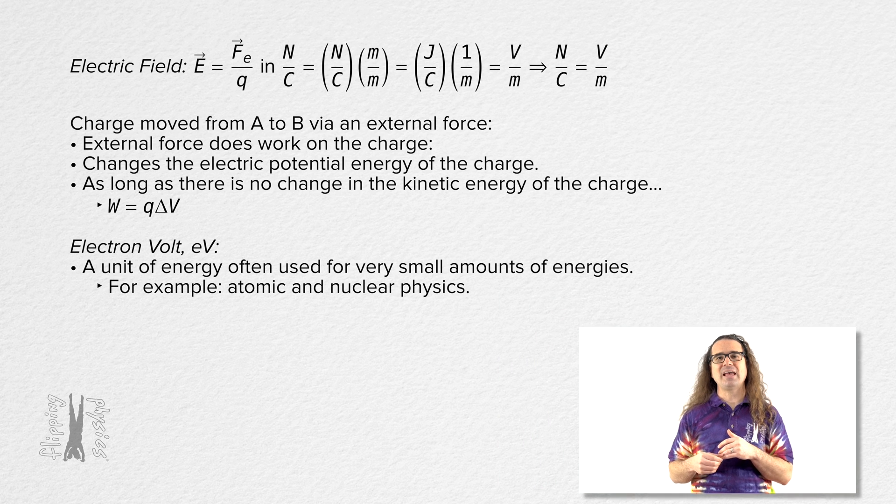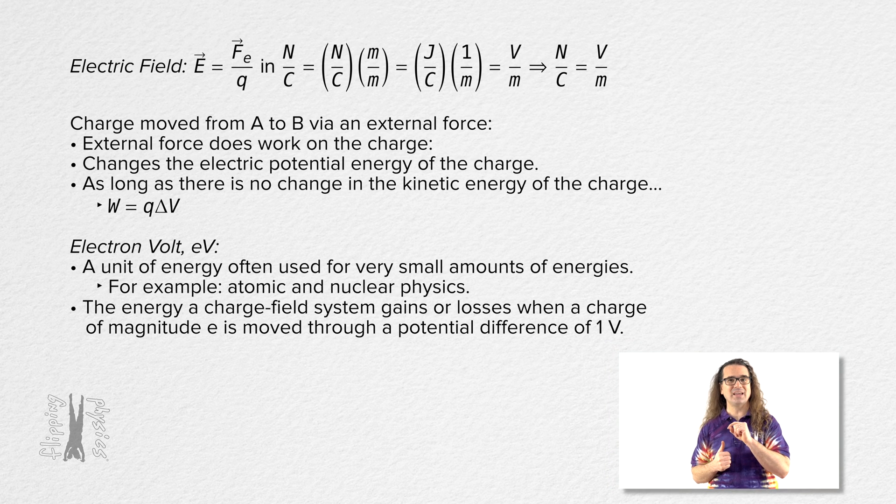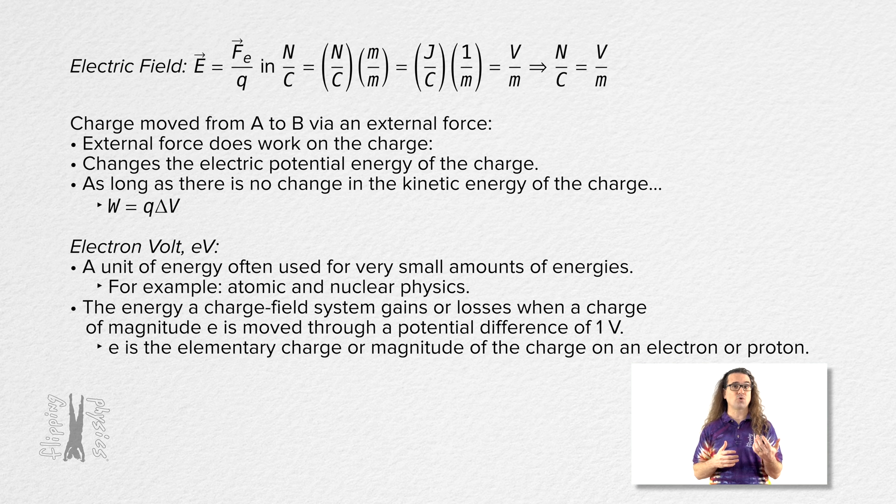An electron volt is defined as the energy a charge-field system gains or loses when a charge of magnitude lowercase e, the elementary charge, or the magnitude of the charge on an electron or proton, is moved through a potential difference of 1 volt.